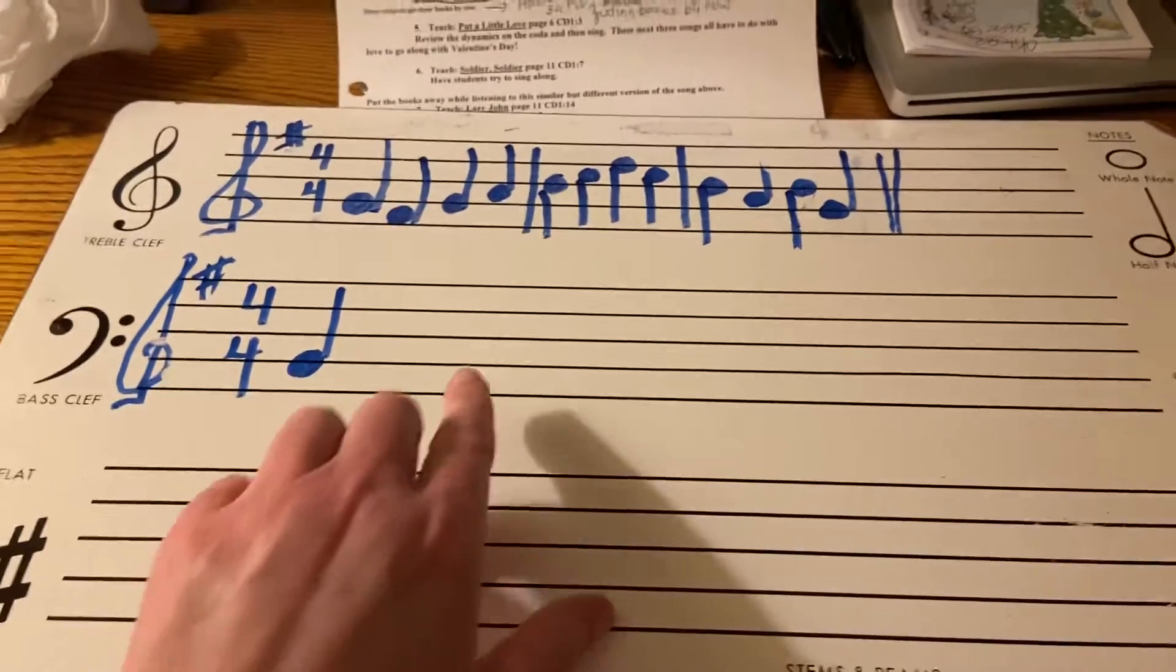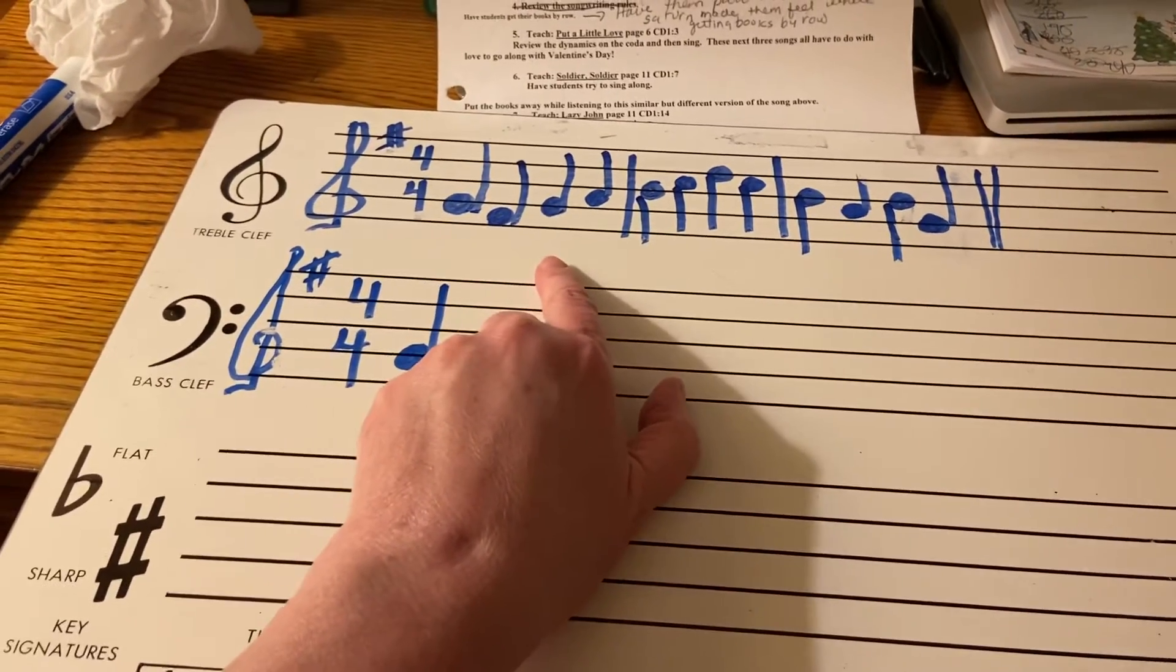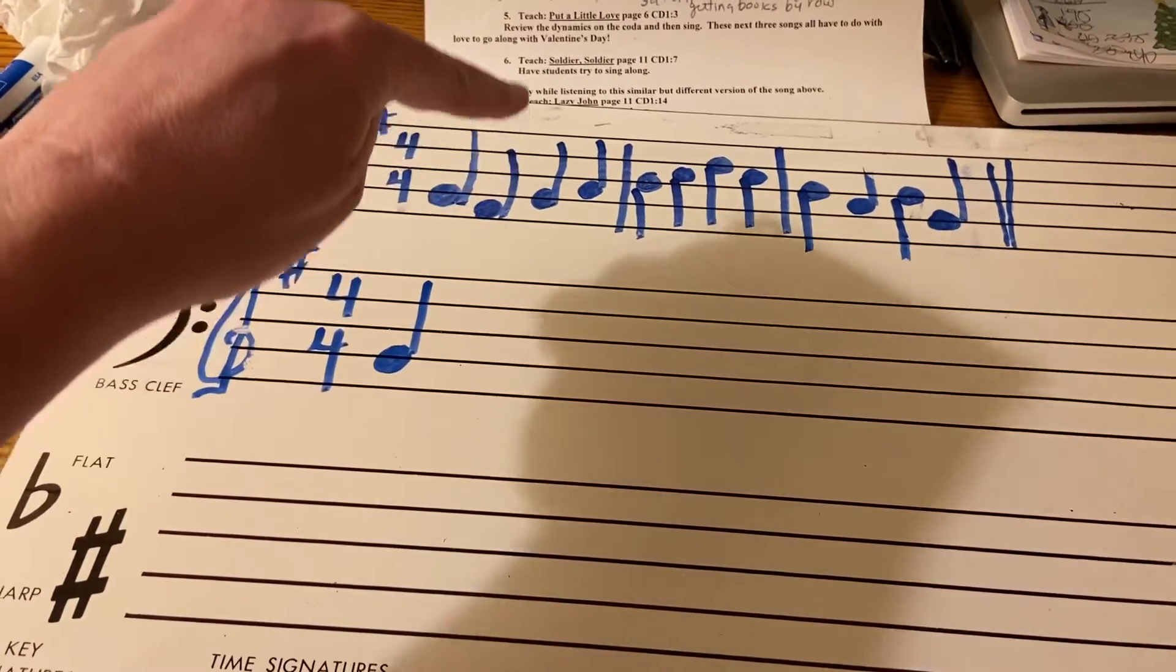One more thing was the way the stems go. If the circle part of the note is below the third line, the stems go up and on the right, just like this.